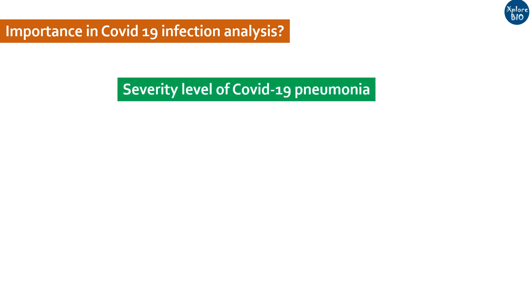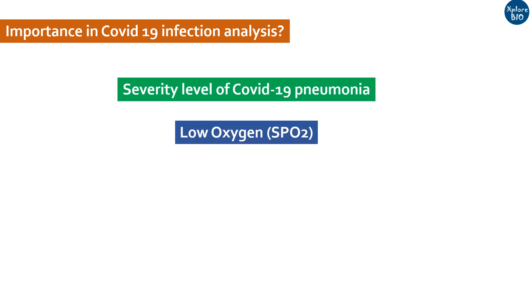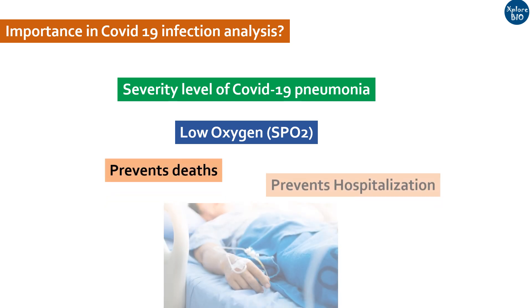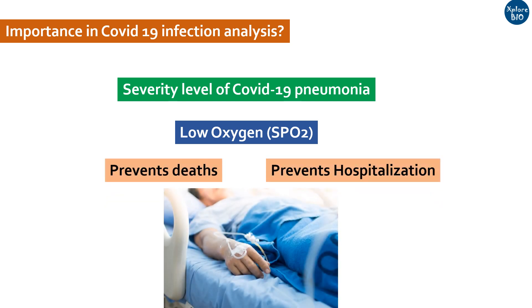HR-CT is an extremely useful diagnostic technique that tells about the severity of pneumonia occurring due to COVID-19, as pneumonia results in low oxygen levels in the body, primarily due to impaired lung function. If the test is done at the right time, it could prevent deaths and even hospitalization of patients.